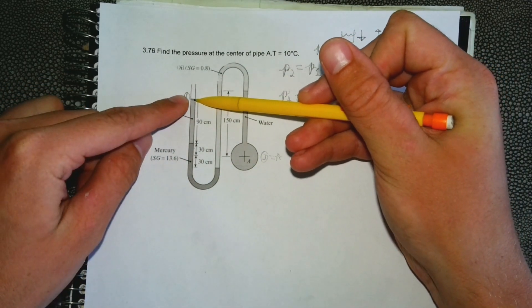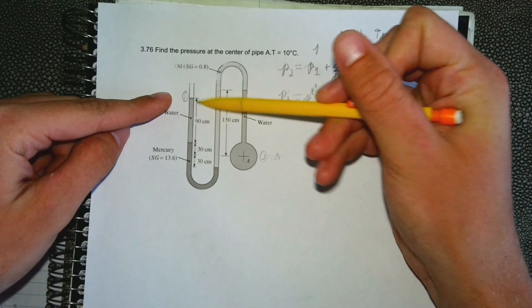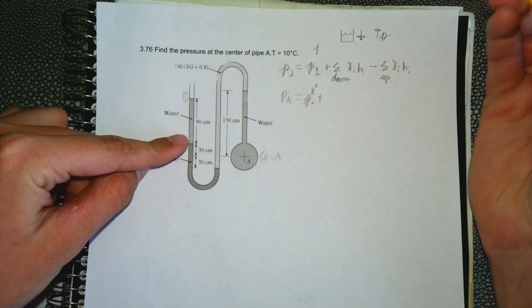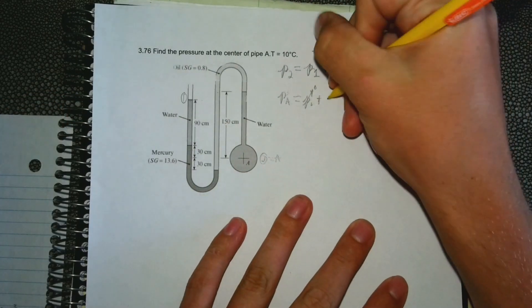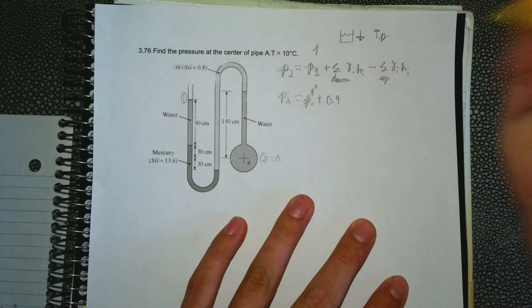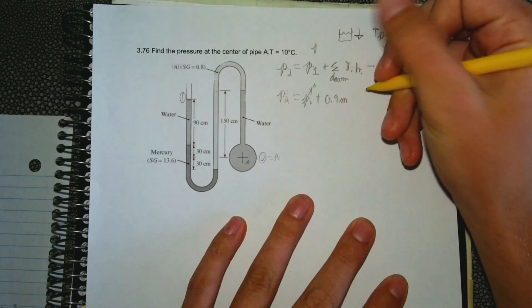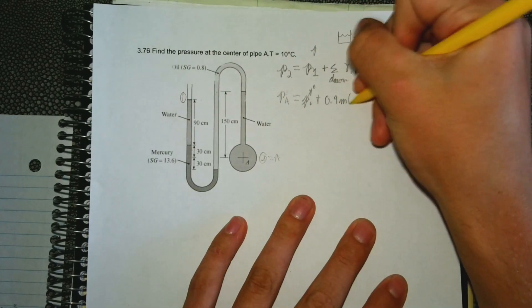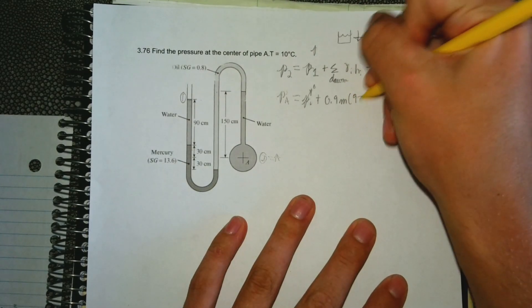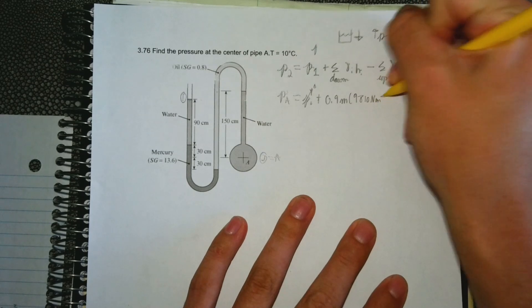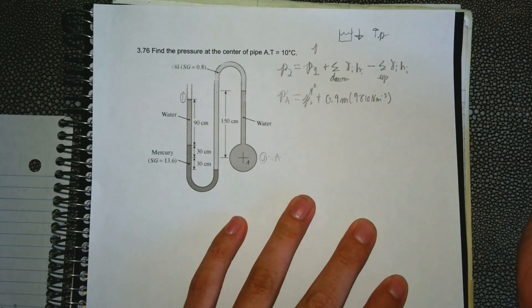We got to move down. If we're getting here to here, we need to move down through water 90 centimeters. We know that is equal, if you divide it by 100, that's 0.9 meters. Then the specific weight of water at 10 degrees Celsius is 9,810 Newtons per meter cubed, so we need to add that.